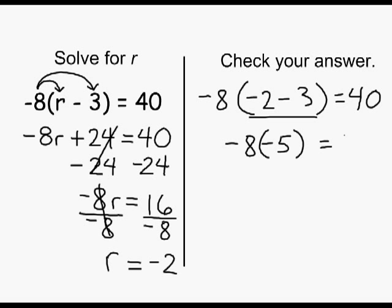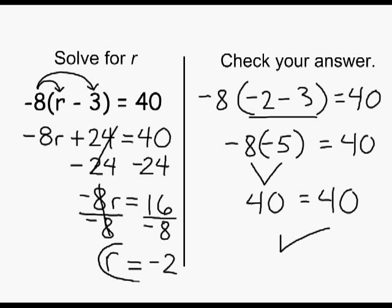When multiplying two negatives, the product will always be positive. And positive 40 is equal to positive 40. So after substituting negative 2 into the original equation, we do indeed come up with a true statement. Because we came up with the same value on the left hand side of our equal sign as we did on the right hand side of our equal sign, and it is a true statement, negative 2 must be the correct answer for this particular problem.